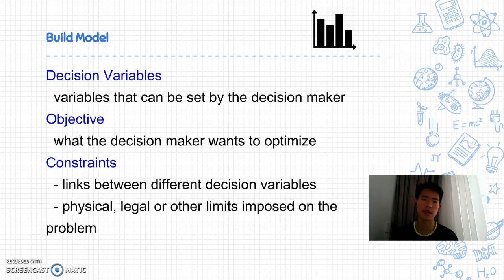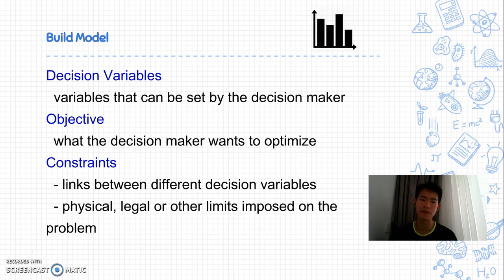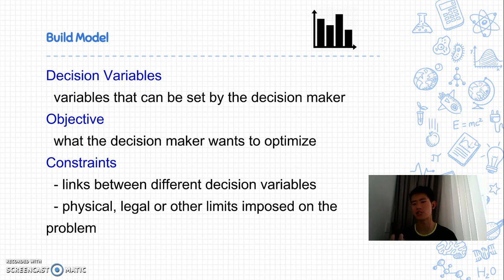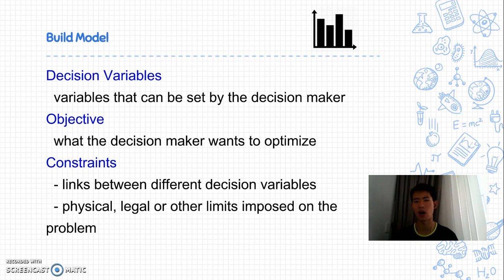For build models, there are three things you want to understand. First is decision variables — variables that can be set by the decision maker, which is something that you can control. Second, objective — that's the goal, what is it that you want to optimize? It can be revenue, it can be profit. Third, constraints — basically things that limit your decision variables to reach a limited objective.